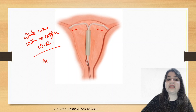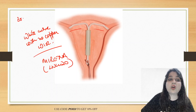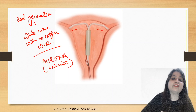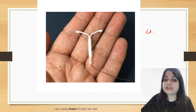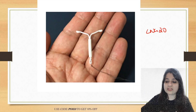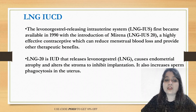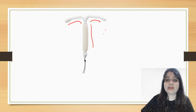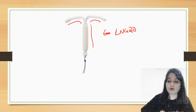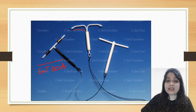This is Mirena, one of the most important intrauterine devices. It is a third generation IUD — Levonorgestrel IUCD, also called LNG-20. It releases 20 micrograms of Levonorgestrel every day. It causes endometrial atrophy and alters the cervical mucus to inhibit implantation. So to identify: completely white, curvy shape, no copper wire — that is Levonorgestrel-20 or Mirena.